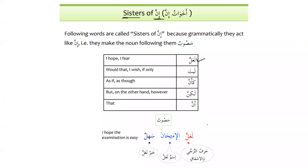La'alla gives the meaning of attarajji (hope) and ishfaq (fear) and has the same function as inna. After la'alla the subject becomes ismu la'alla and predicate becomes khabaru la'alla. For example: la'alla al-imtihana sahalun — I hope the exam is easy. The noun after la'alla is mansoob. In the Quran, la'alla is generally translated as 'perhaps' rather than 'I hope' or 'I fear.'